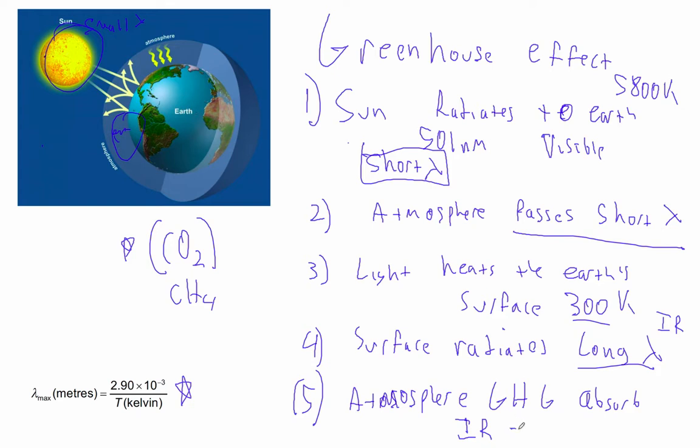It absorbs the IR and re-radiates it back to earth. It also re-radiates it into space, back to earth. Now, this is good news. The earth would be very, very cold without some greenhouse effect. Some greenhouse effect is needed for there to be liquid water on the surface of the earth in life.